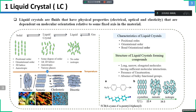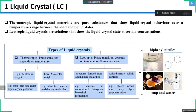Examples include 5CB. Liquid crystals can be subdivided into two broad categories: thermotropic and lyotropic liquid crystals. Thermotropic liquid crystal materials are pure substances that show liquid crystal behavior over a temperature change between the solid and liquid state — biphenyl derivatives are common examples. Lyotropic liquid crystals are solutions that show a liquid crystal state at certain concentrations, with examples including surfactants and water.